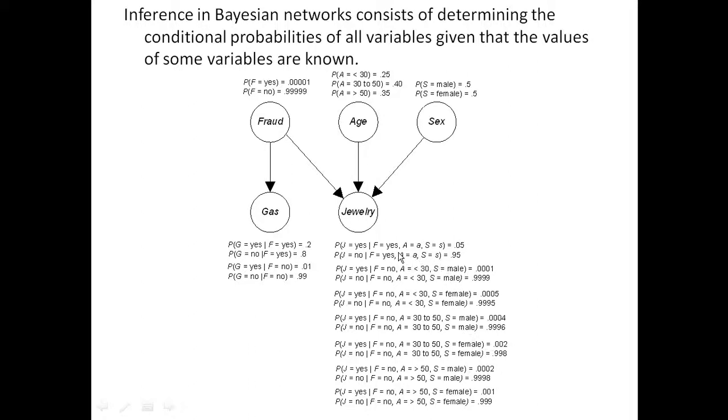This value up here means that the credit card is being used fraudulently. F equals yes. And these variables mean they can have any values. It doesn't matter what the age or the sex is, if the card is being used fraudulently. Because somebody else has your credit card. And the probability of jewelry purchase, if it's being used fraudulently, is .05.